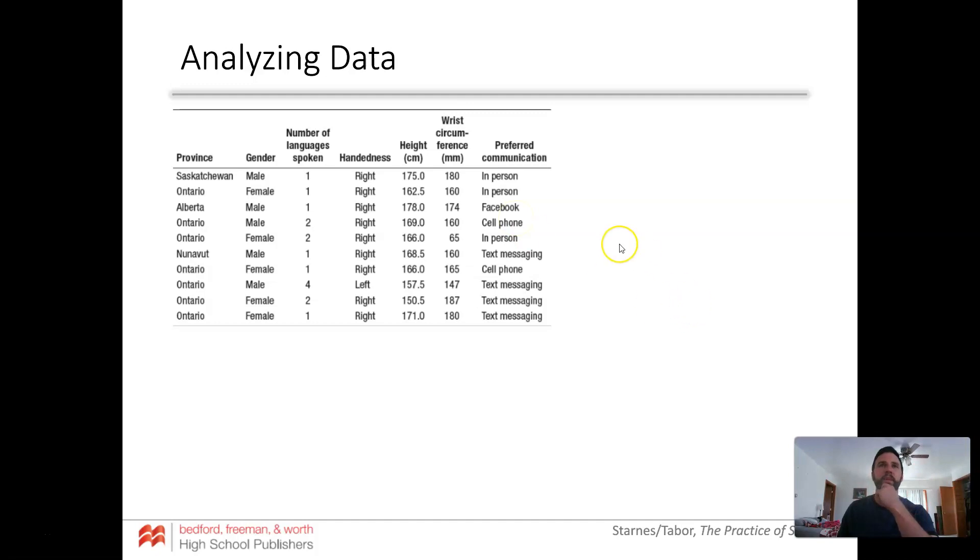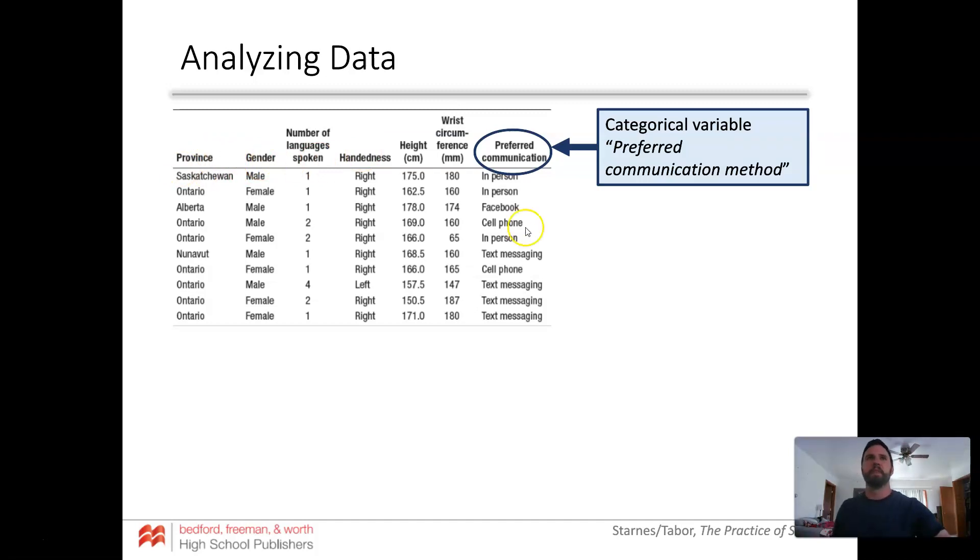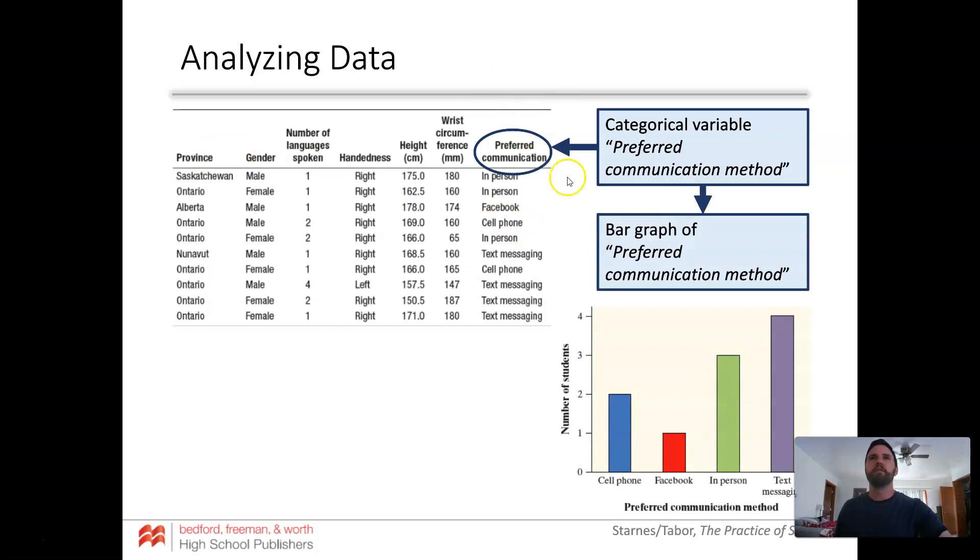So let's look at this data. Preferred communication, handedness, gender, province are all categorical because there's not a number assigned to them, it's not a measurement. So when we look at categorical data, we want to turn it into some sort of number. We count it up and we made a bar graph. Bar graph is the best communication method for categorical data, lets you know how many people like what thing or are what thing.